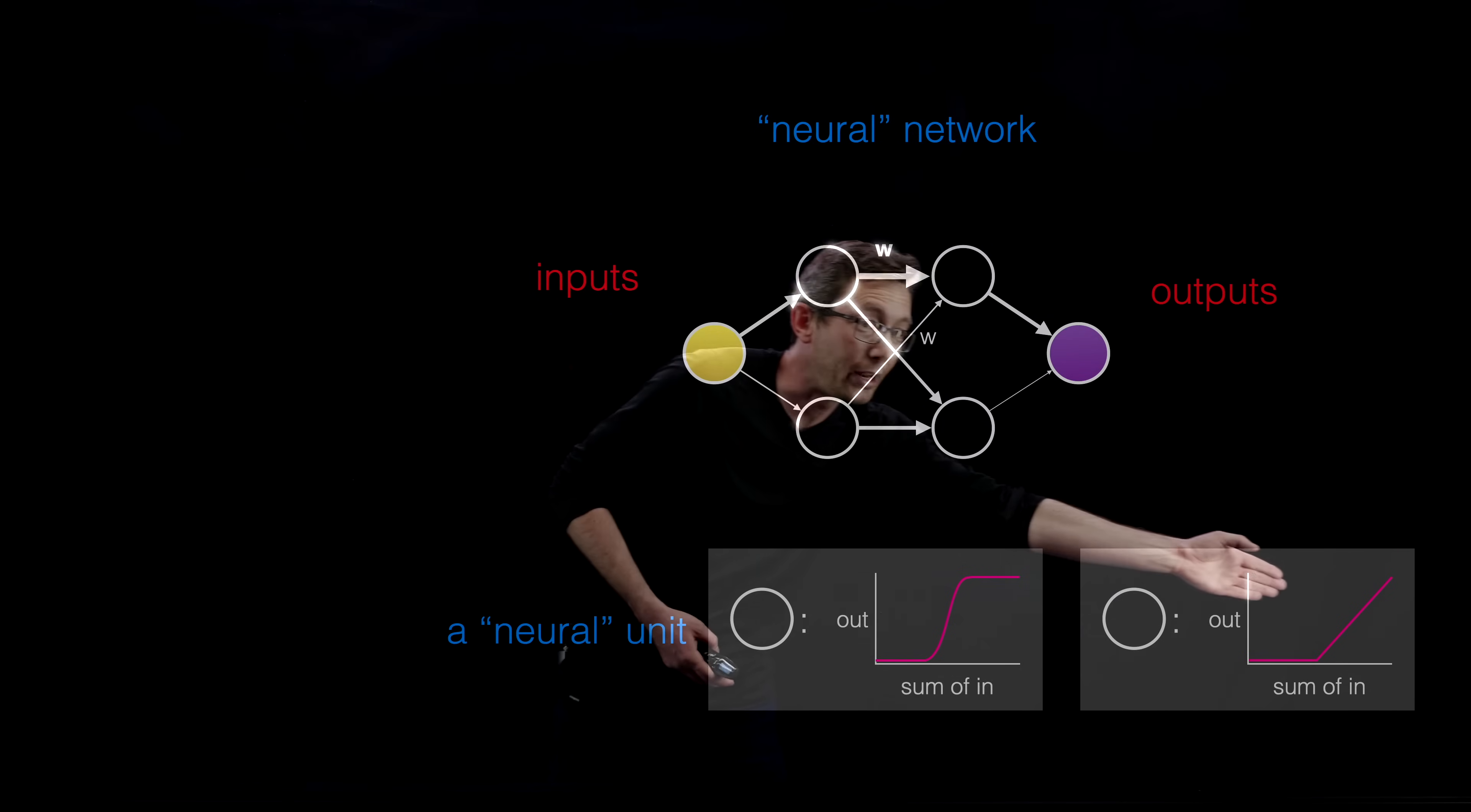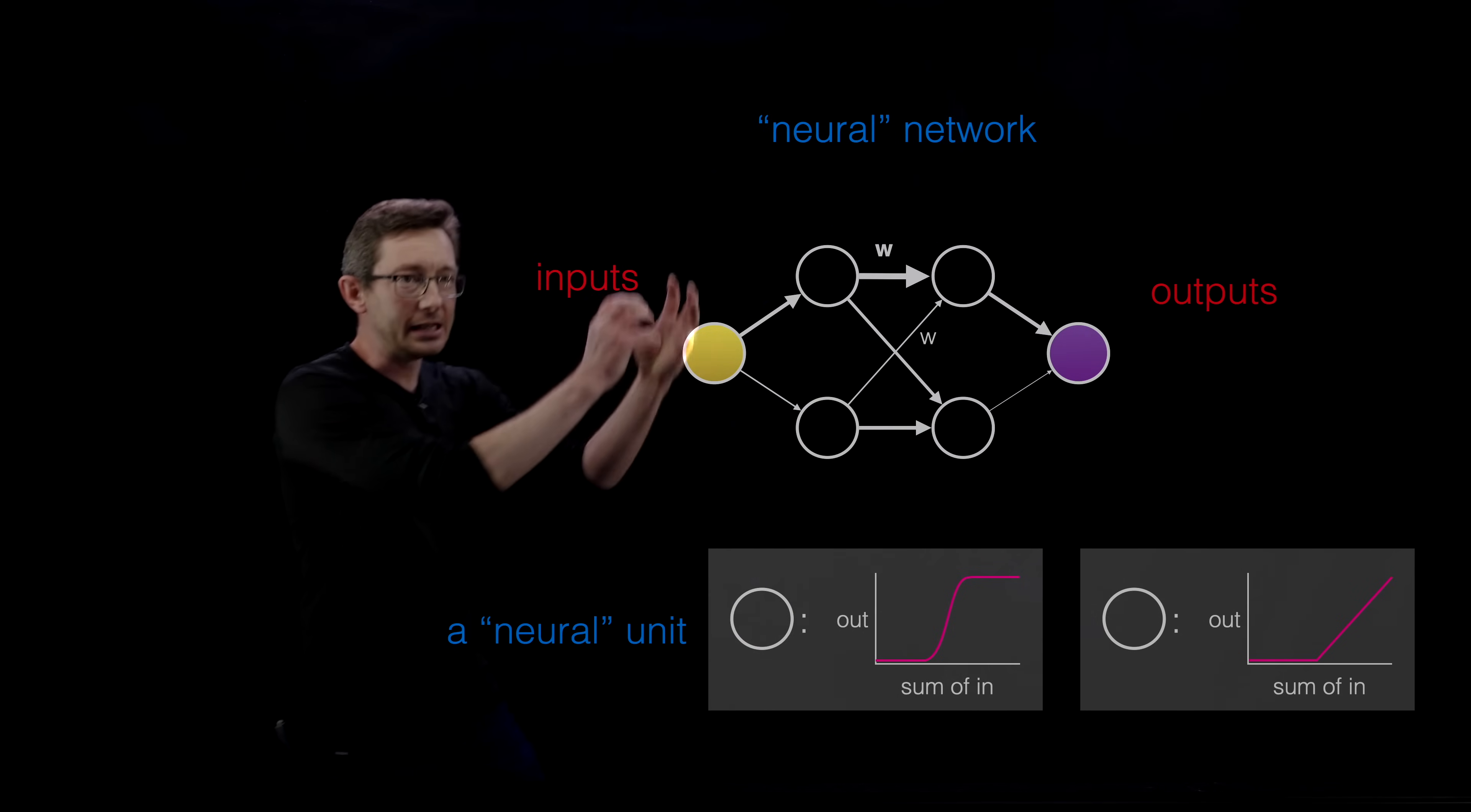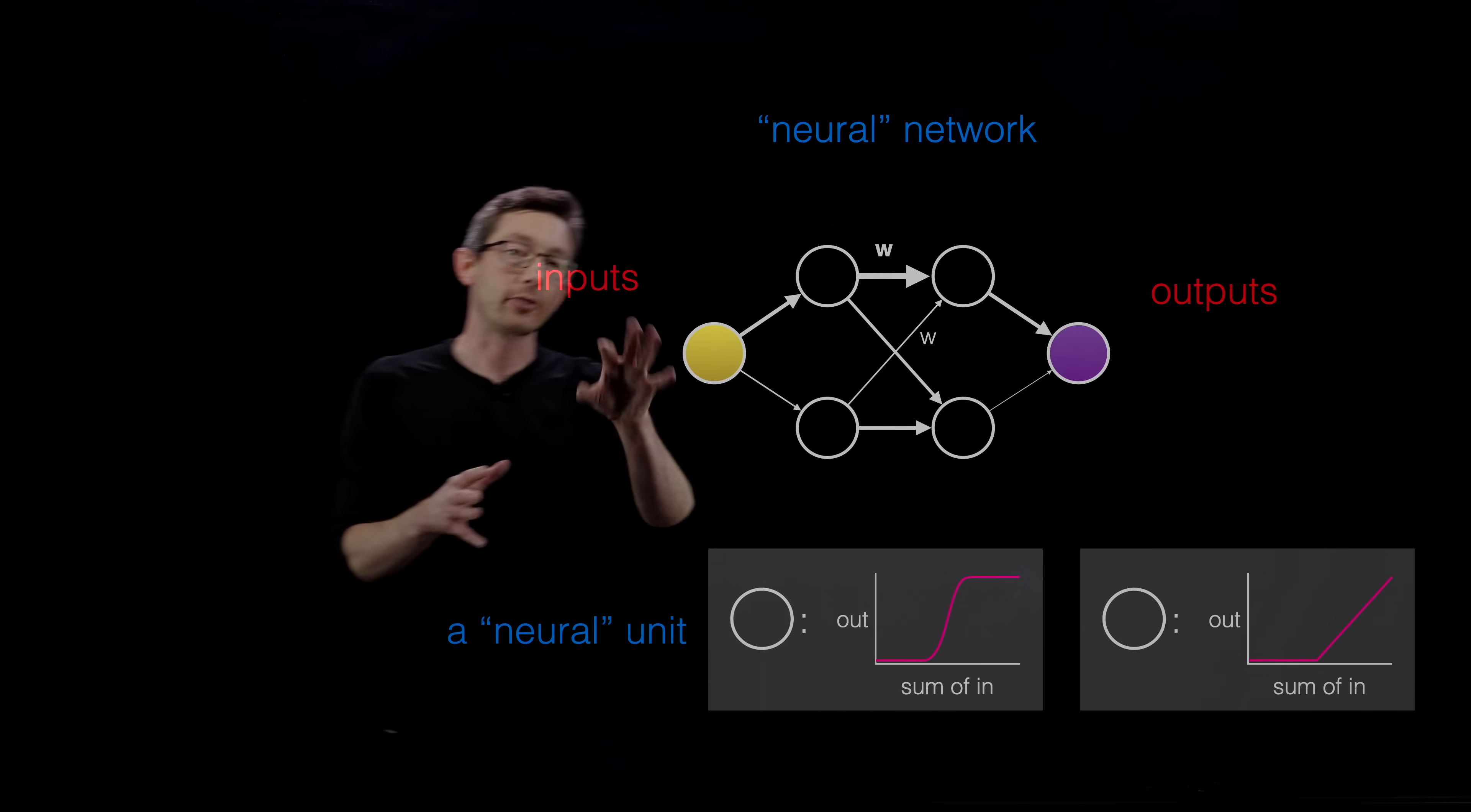Modern neural networks often use this thing called a RELU, a rectified linear unit that essentially looks like this. It's zero up to some minimum input and then it's linear afterwards. And so each of these neurons or nodes is stacked together into a neural network into a sequence of computations that builds an output from the inputs.